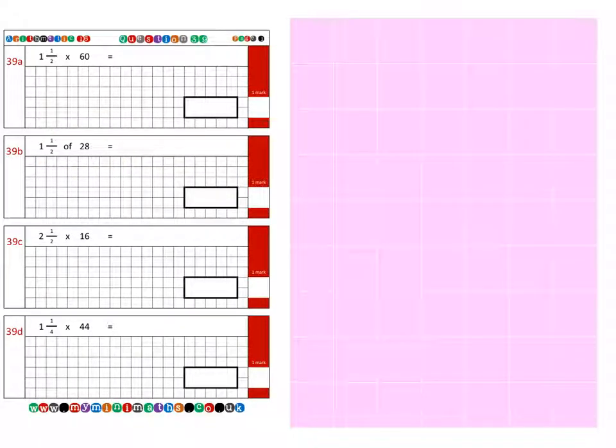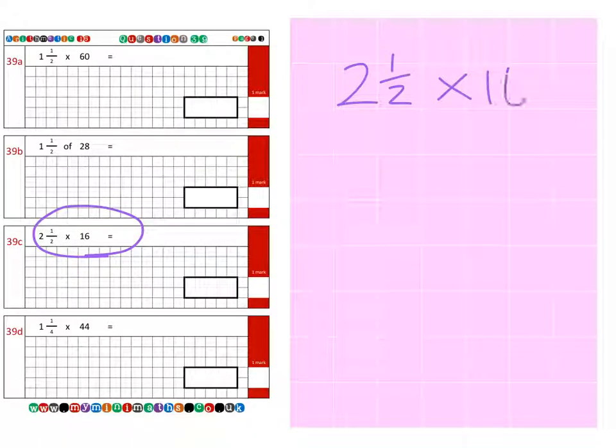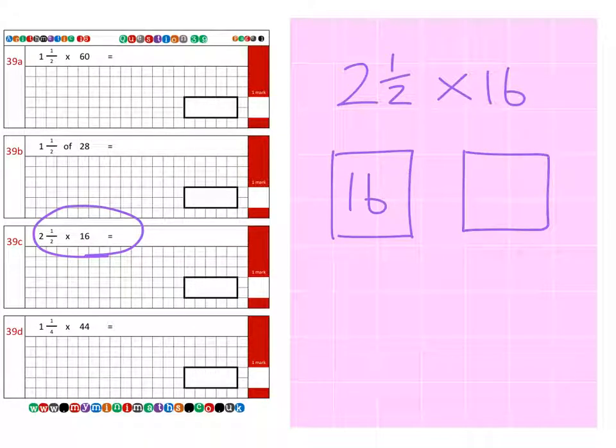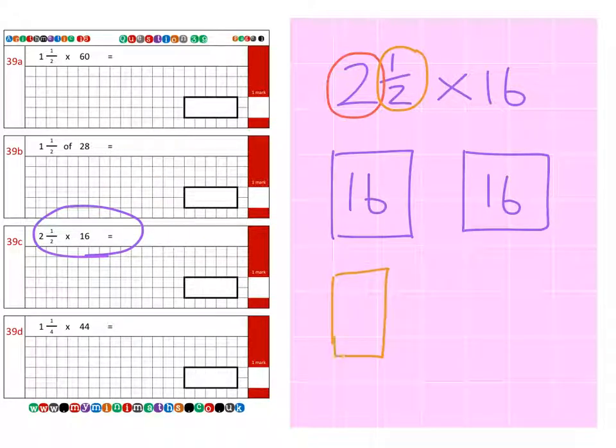Next question 39C which is two and a half times 16 or two and a half lots of 16. So first of all we have a box of 16 sweets, another box of 16 sweets, so there's our two boxes, and then finally we have half a box of 16 which is 8, so we add 16, 16 and 8 together to get a grand total and final answer of 40.